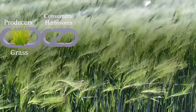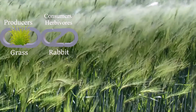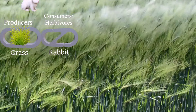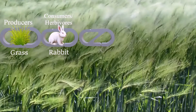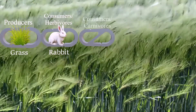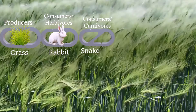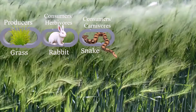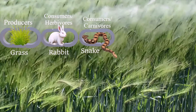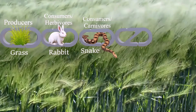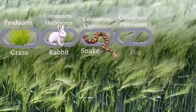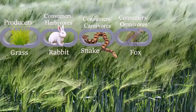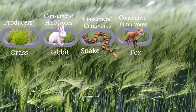Next comes the consumers. There are three different kinds. First are herbivores, which are animals that only eat plants. There are also carnivores, which are animals that only eat meat. And omnivores, which are animals that eat both plants and animals.